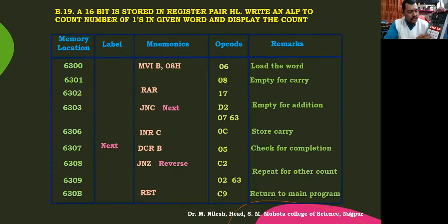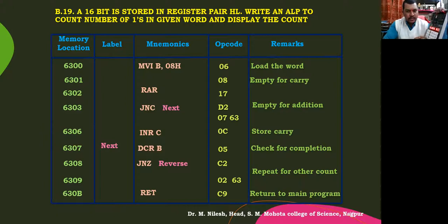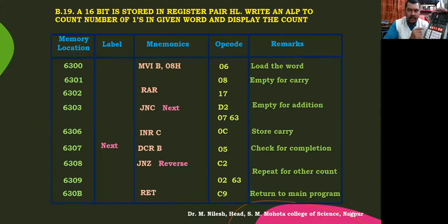We are putting 06, then next 08 — this is the count that we need to put in register B. RAR that is 17. Next D2, then we have 0763. Then this instruction was wrongly written before — this is 0C, increment C. Then 05. Then jump if not zero, C2, then 0263. And at the end we have C9. So this was the subroutine written there.